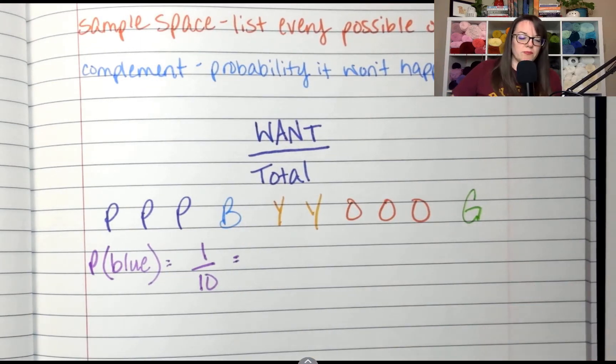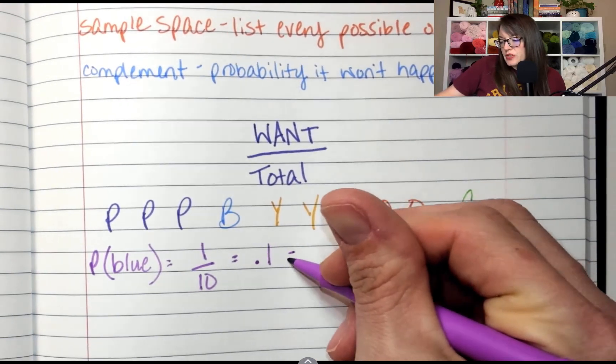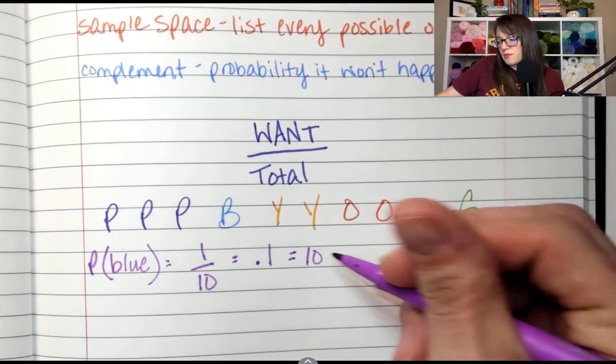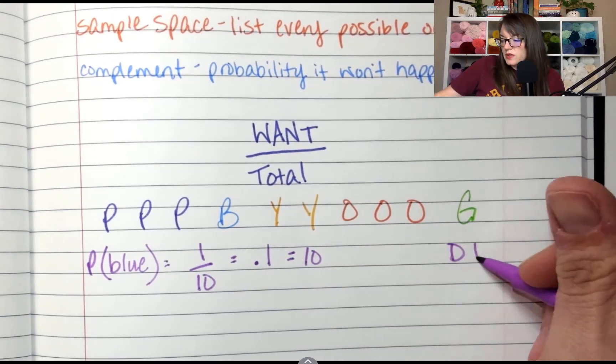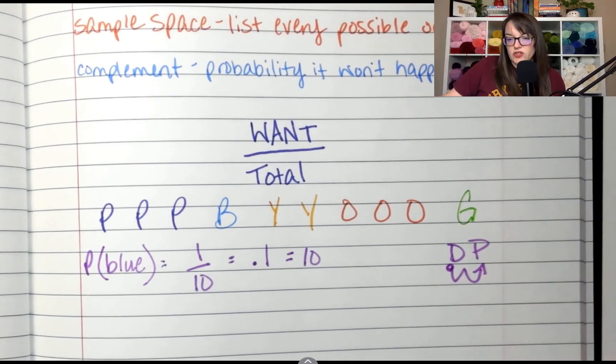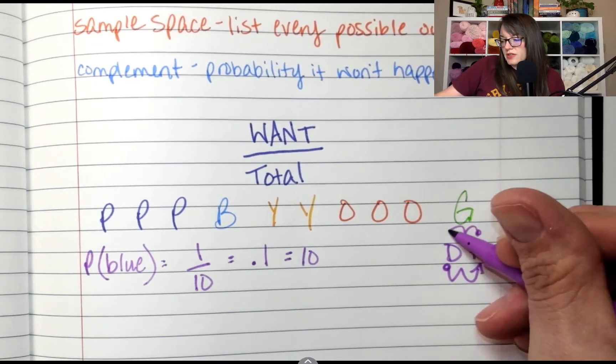Now let's turn that into a percent. Well, let's turn into a decimal first. What is one tenth as a decimal? Point one. And then as a percent, it's 10%. Remember to go from decimals to percents, it's two decimal place jumps. And then from percent to decimal, it's two decimal place jumps the other way.